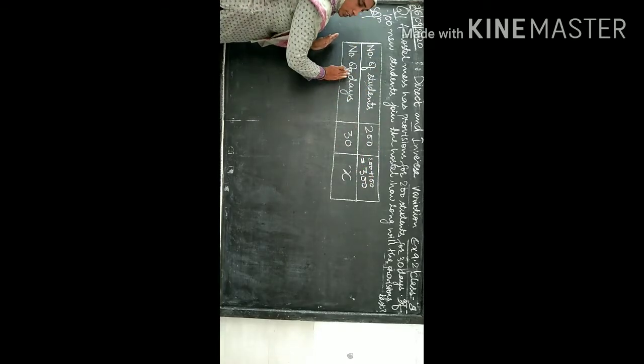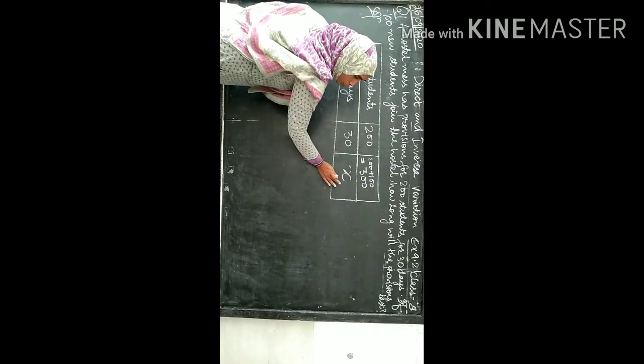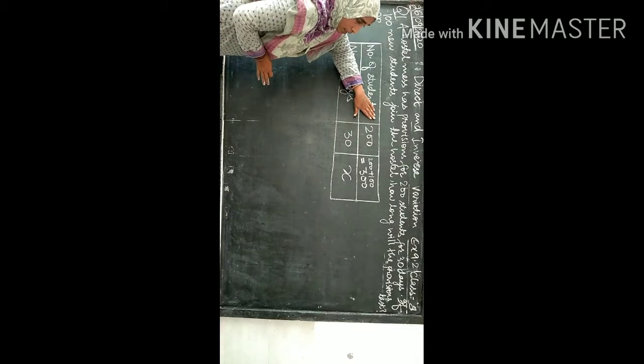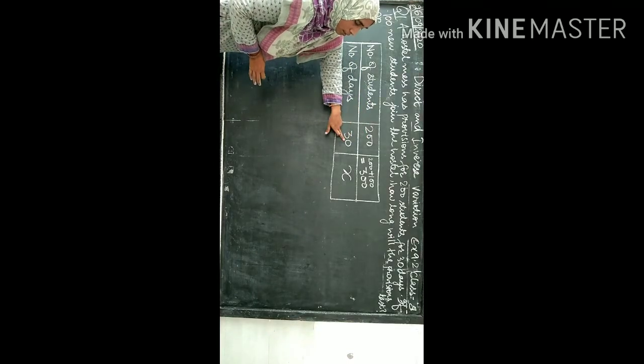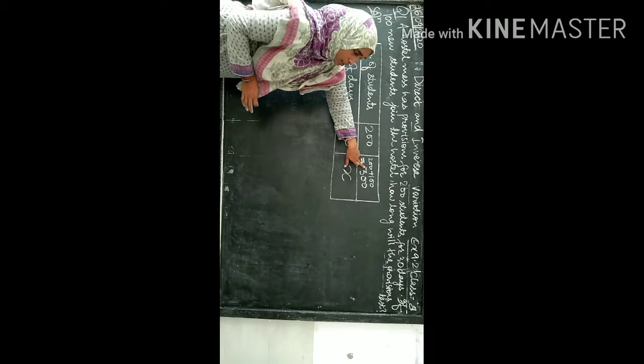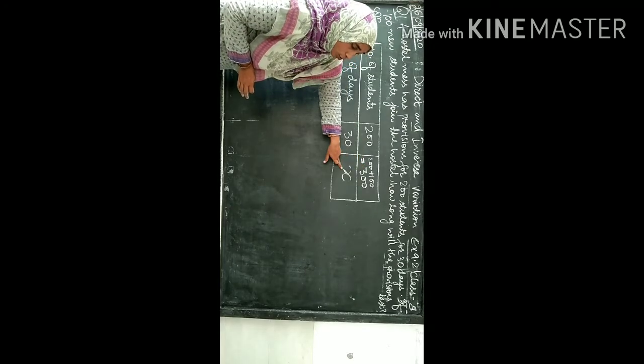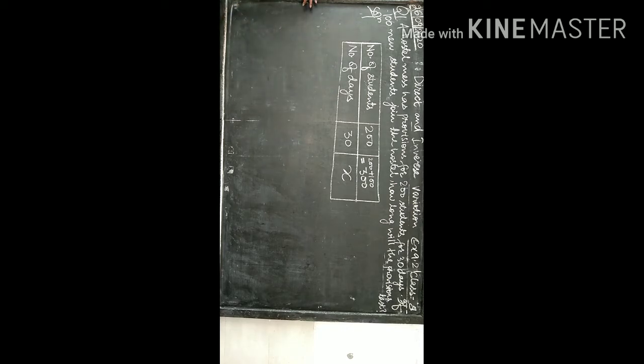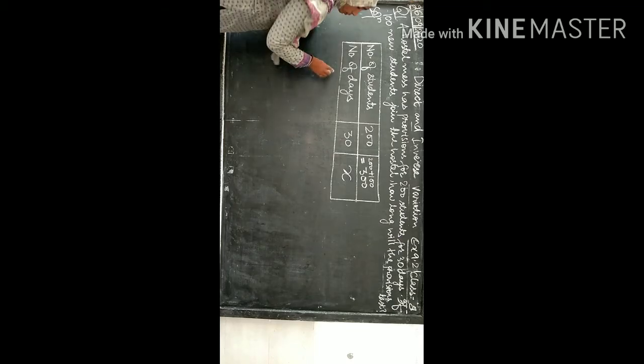You can understand this from the table. 200 students can eat for more days, more students eat for fewer days. Number of days - this is the inverse variation. Inverse variation, we have the inverse ratio.